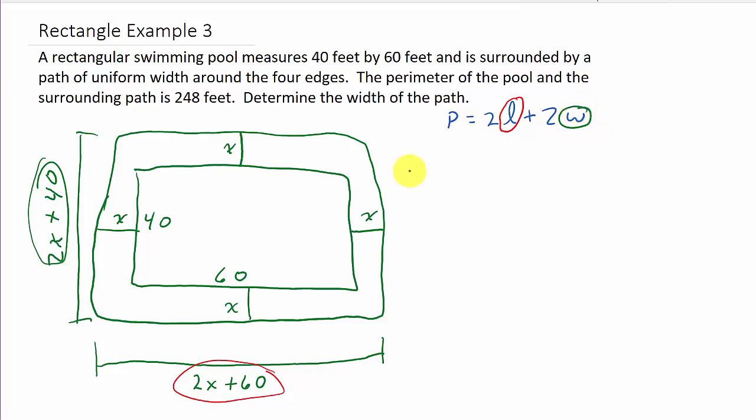This value here we're going to put in for w. So the perimeter is twice the length, which is 2x plus 60, plus twice the width, which is 2x plus 40.